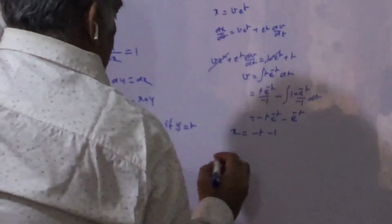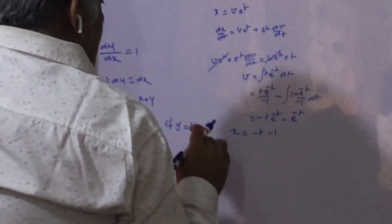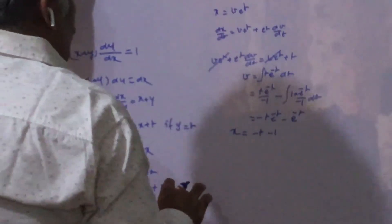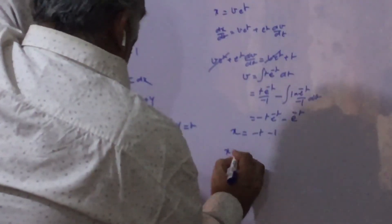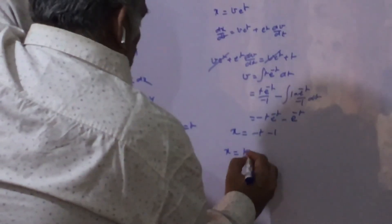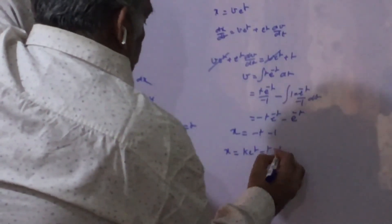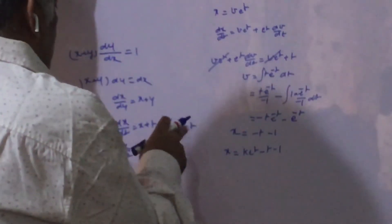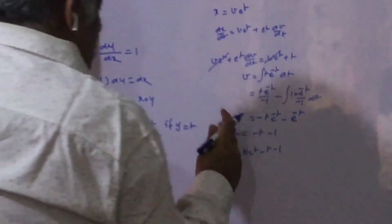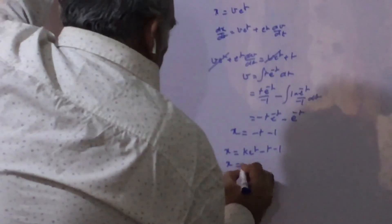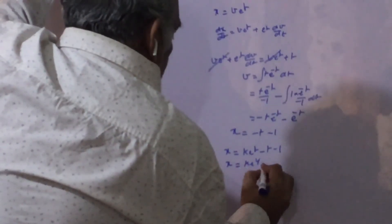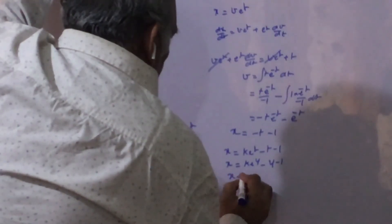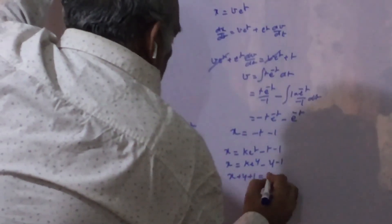The complete solution is the addition of the particular solution and the homogeneous solution, so x = K·e^t − t − 1. Since we had put y = t, substituting back gives x = K·e^y − y − 1, or x + y + 1 = K·e^y.